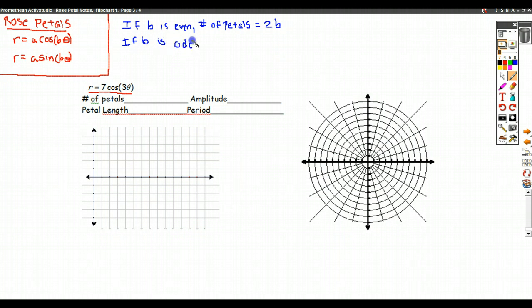If b is odd, then the number of petals is just equal to b. And a is equal to the petal length.